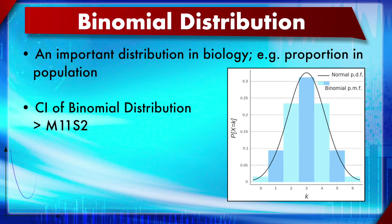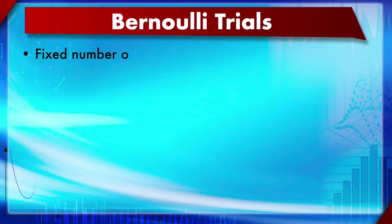The confidence interval of the binomial distribution can be calculated using the formula discussed in module 11, section 2. The modified Wald method can be used for it, and you can review that method. Now, what are Bernoulli trials in the case of the binomial distribution?